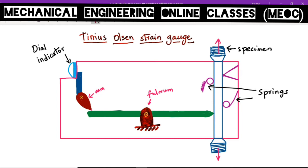When the test specimen is under tensile load it will elongate, and the lever will rotate about the fulcrum. Accordingly, the arm will also rotate.